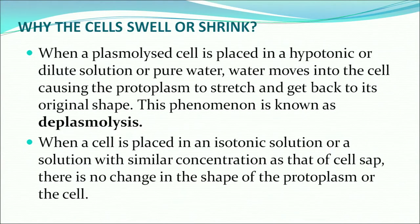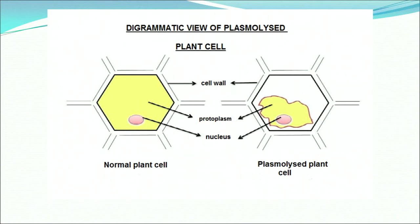When a plasmolyzed cell is placed in a hypotonic or dilute solution of pure water, water moves into the cell causing the protoplasm to stretch and return to its original shape — that is called deplasmolysis. When a cell is placed in an isotonic solution with similar concentration as that of the cell sap, no change in the shape of the protoplasm or cell takes place. Here is an illustration of the plasmolyzed cell showing how the cell has shrunk against the cell wall.